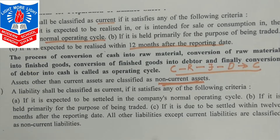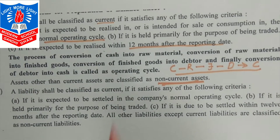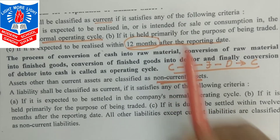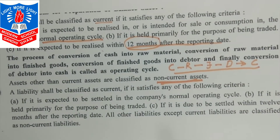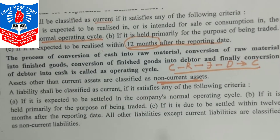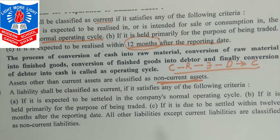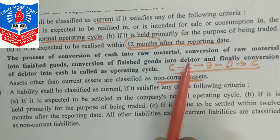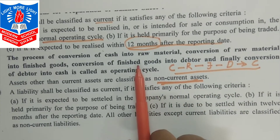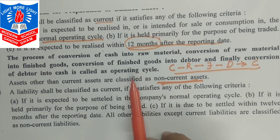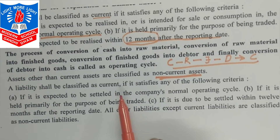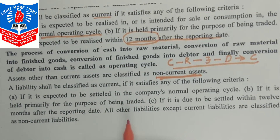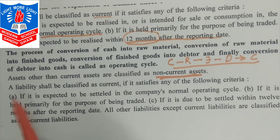In short, जो assets operating cycle के अंदर या 12 महीने के अंदर release हो रहे हों, वे current assets हैं। And those which take more than 12 months of the operating cycle are known as non-current assets. Similarly, it is very important to know about liabilities.